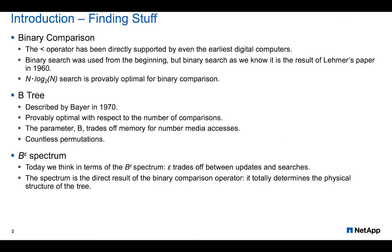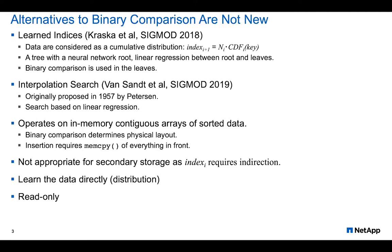The natural tension between updating and searching on secondary storage arises from the nature of binary comparison. Binary comparison totally dictates the physical layout of a data structure because a datum can live in one place and only one place, otherwise the data structure is inconsistent and incorrect. People have been thinking about alternatives to binary comparison for a long time and some recent work of interest includes learned indices.